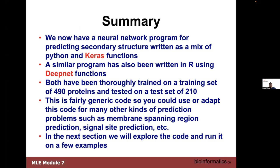What I may not have emphasized very much is that this code for doing secondary structure prediction could also be trained or adapted to find membrane-spanning regions in proteins, signal sites, or maybe even B and T cell epitopes. The code itself is fairly generic — it's basically looking for patterns. All you have to do is generate training data, either find it or assemble it yourself. That's pretty much a summary of the integration with Keras in secondary structure prediction.